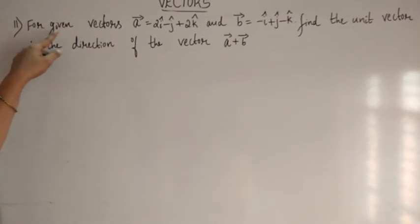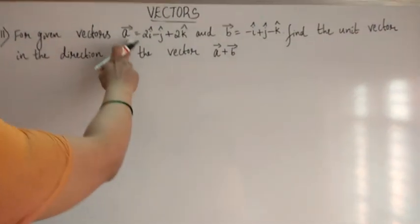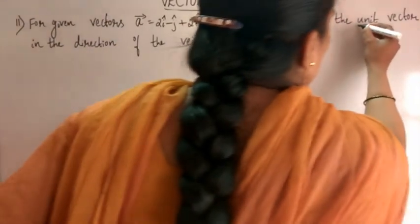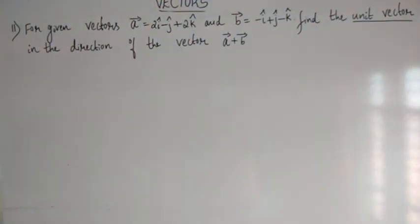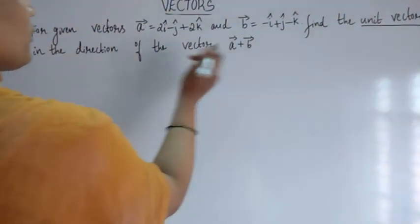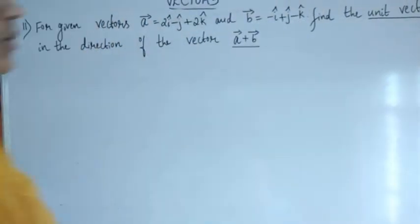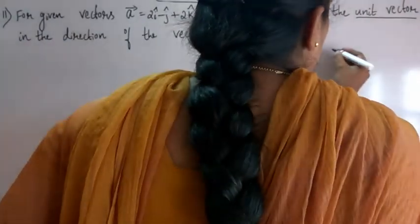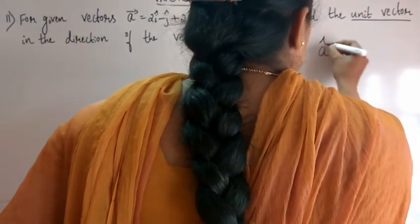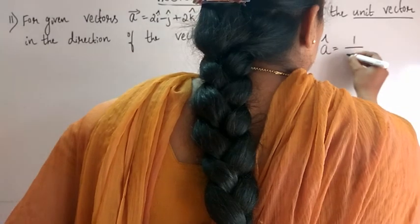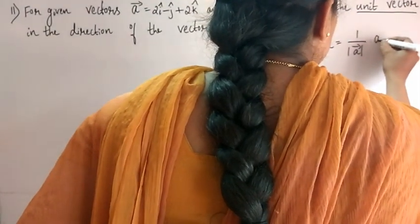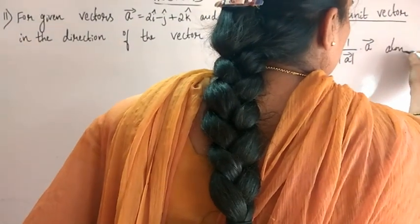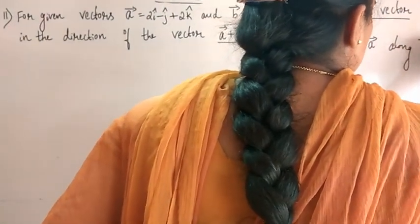First problem: for given vectors A and B, find the unit vector. Here we have to find the unit vector in the direction of vector A plus vector B. The formula of unit vector from last class is: A-cap equals 1 by magnitude of vector A, into vector A. This is the unit vector along the direction of vector A.